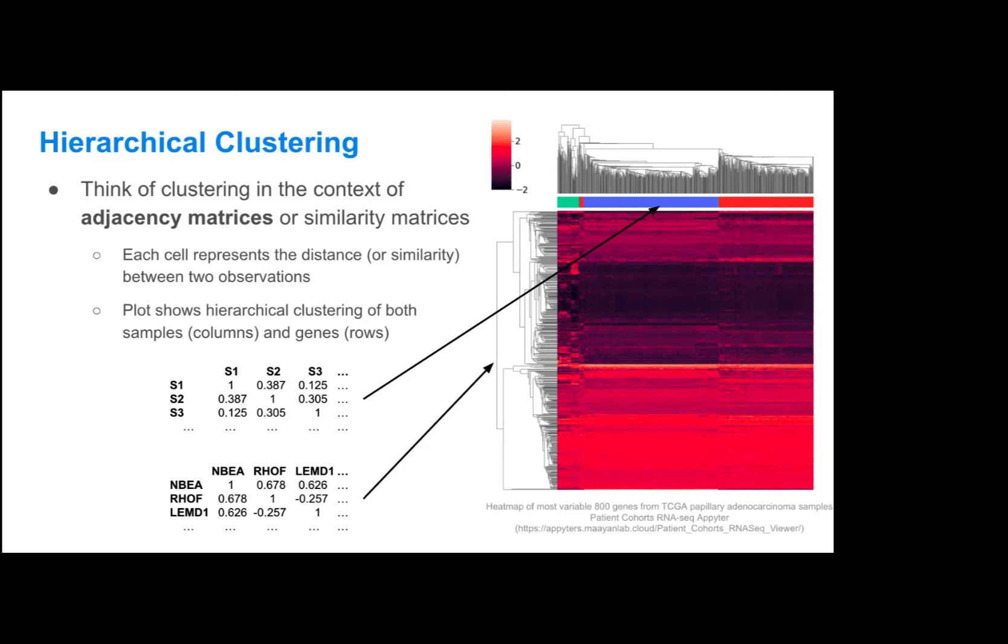On this plot on the right here, it might be a little confusing, but there's actually hierarchical clustering going on with both samples and genes. Across the top, the columns, those are all the different samples, and you can see that those are actually the three clusters that we were able to detect with hierarchical clustering on the same papillary adenocarcinoma samples that I showed earlier. You can think of that clustering as being organized based on the similarity of each sample with the other samples. So samples are basically clustered with other samples that are very similar, and they're grouped that way also in this plot.